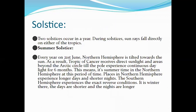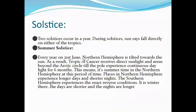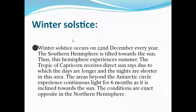As a result of the northern hemisphere tilting toward the Sun, the Tropic of Cancer receives direct sunlight. The area beyond the Arctic Circle experiences continuous daylight for six months. So the Tropic of Cancer receives maximum heat, and the Arctic Circle has six months of daylight.